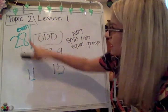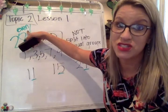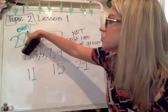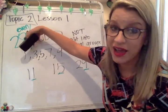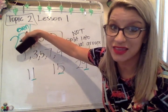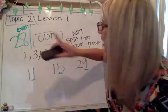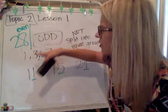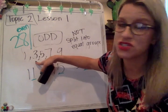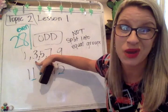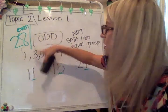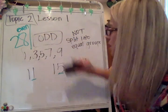Remember: even numbers, you can skip count by twos to get to them. Your doubles facts all have sums that are even. If you were to split an odd number into equal groups, it would not work — you cannot make equal groups with an odd number.